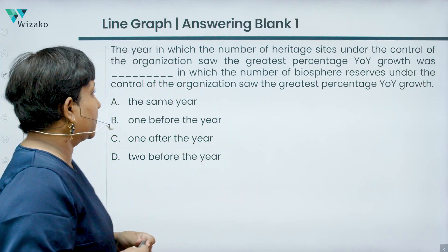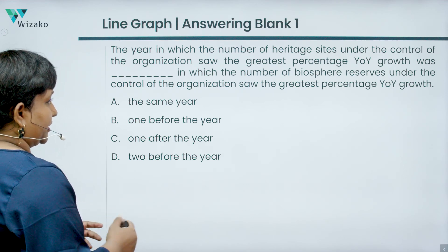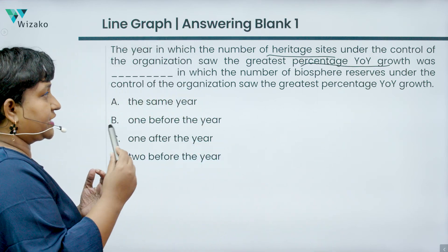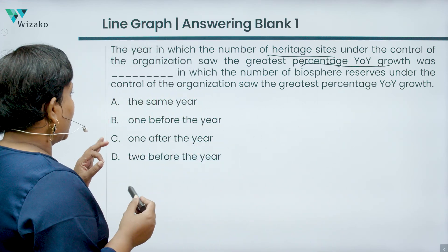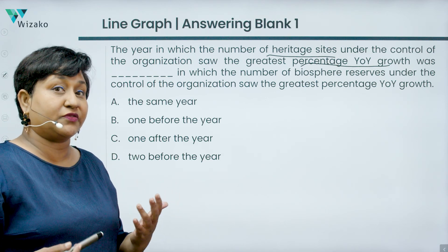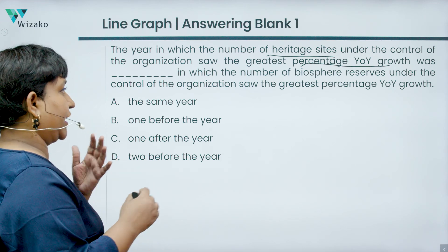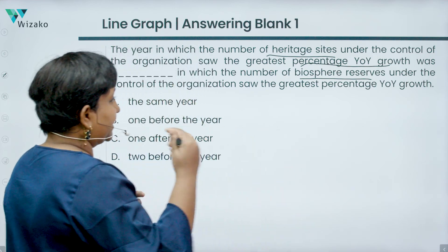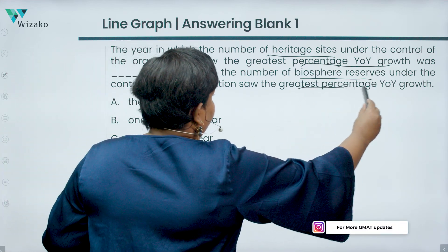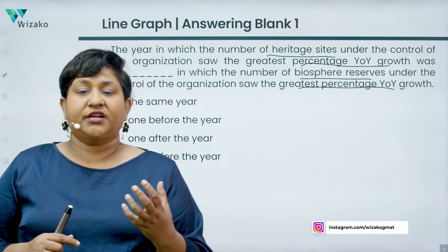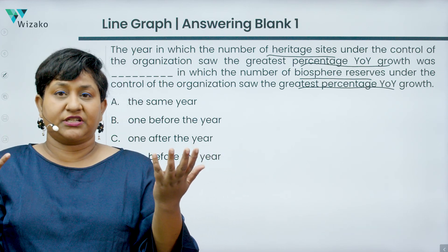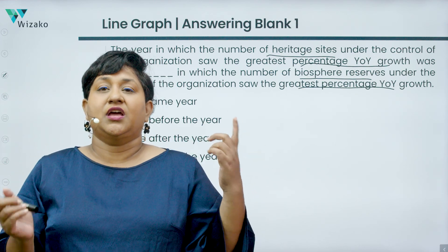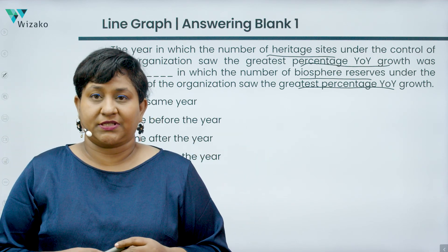Let's read the first statement: 'The year in which the number of heritage sites under the control of the organization saw the greatest percentage year-on-year growth was [blank] — same year / one before / one after / two before — the year in which the number of biosphere reserves saw the greatest percentage year-on-year growth.' So we need to find both years and compare them.